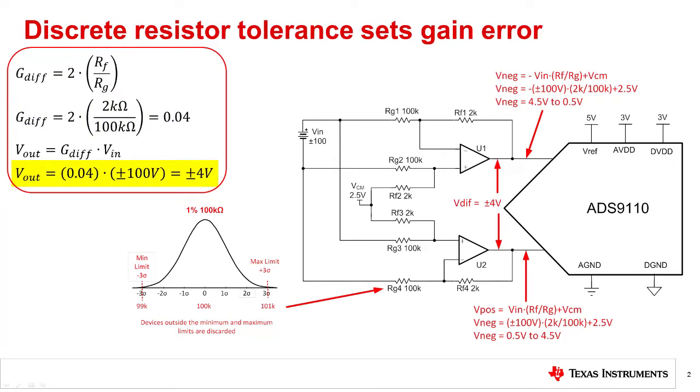The gain accuracy for this circuit depends on the tolerance of RF and RG throughout this circuit.